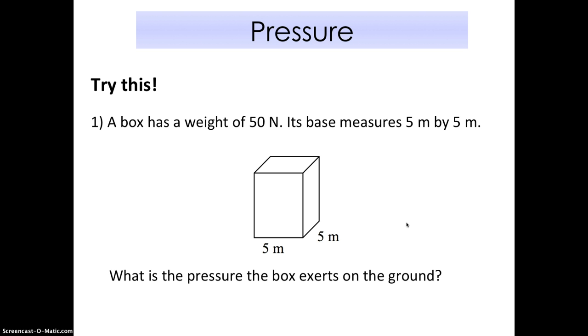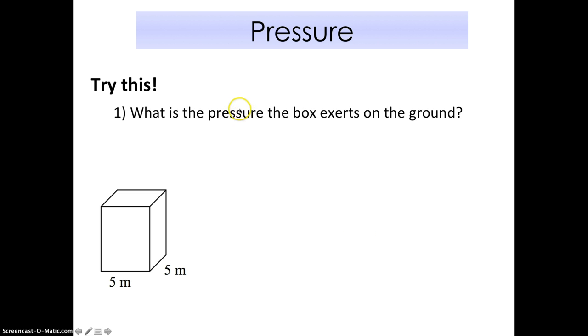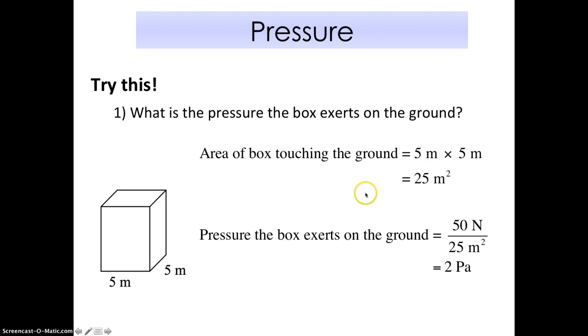After that, continue and check with my answer. You should have done that, so let's check the answer. What's the pressure of the box exerting on the ground? Area of the box touching the ground is 5 meter times 5 meters, which is 25 meters square. I do not need to change the units because they are already in meters. Pressure is given by force divided by area. The force is the weight, which is 50 newtons, divided by the area we just found. 50 divided by 25, we get 2 Pascal. We have a very nice number here, very simple. You should be able to do this.